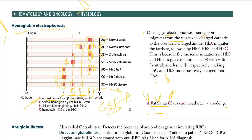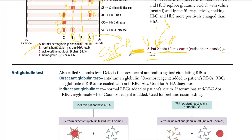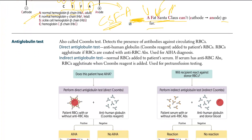The mnemonic is either 'Fat Santa Claus can't go far' or CSF-A — both are good ways to remember the order. Moving on with the anti-globulin testing.